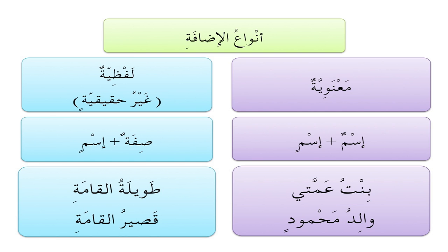The غير حقيقية (لفظية) إضافة is made of a صفة — an adjective — followed by an اسم. For example: بنت عمتي, literally the daughter of my paternal aunt, meaning my cousin — two nouns, بنت and عمّة, made definite by the يا at the end. Another example is والد محمود, the father of محمود — again two nouns stringed together. For the لفظية type, look at طويلة القامة, meaning long of stature, i.e., tall. So قصير القامة means short of stature. You can say: والد محمود قصير القامة — the father of محمود is short; بنت عمتي طويلة القامة — my cousin is tall.